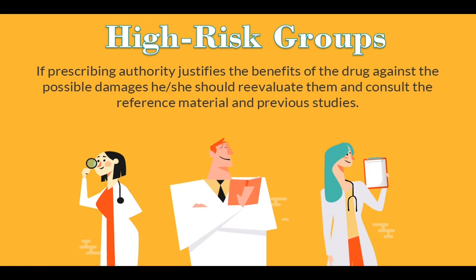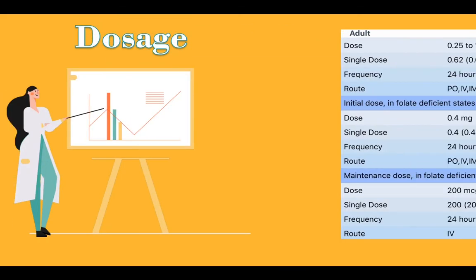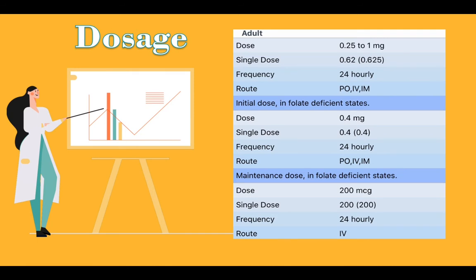High risk groups. If prescribing authority justifies the benefits of the drug against the possible damages, he or she should reevaluate them and consult the reference material and previous studies. Adult dose: 0.25 to 1 mg. Single dose: 0.62. Frequency: 24 hourly. Route: oral, IV, IM. Initial dose in folate deficient states: dose 0.4 mg. Single dose: 0.4. Frequency: 24 hourly. Route: oral, IV, IM.